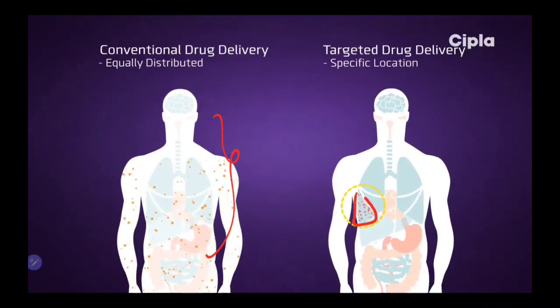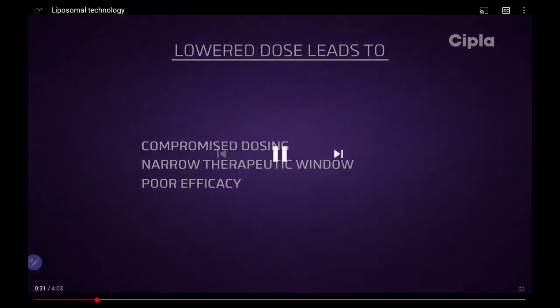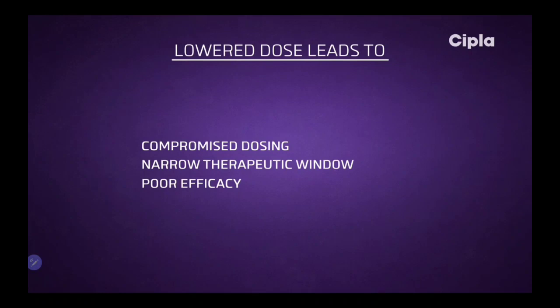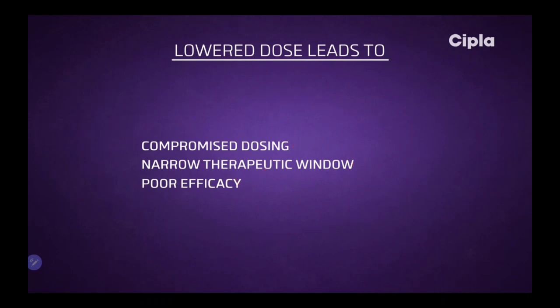By targeting the drug at a particular place, what you can do to avoid the negative effects is to lower the dose. However, lowering the dose alone leads to a narrow therapeutic window and poor efficacy, which I also don't want. So instead, along with lowering the dose I want to target the drug to avoid cytotoxicity. To avoid these problems, I can convert the dosage form into targeted drug delivery using liposomes, which we will see in the next part.